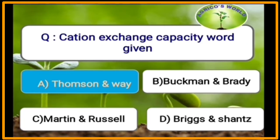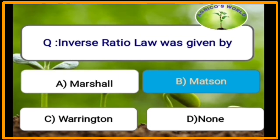The term cation exchange capacity was given by Thomson and Wade. Inverse ratio law was given by Mattson.